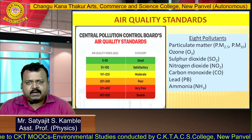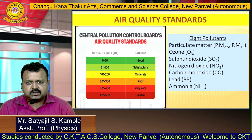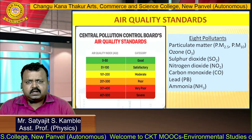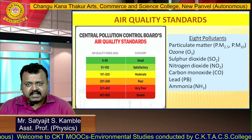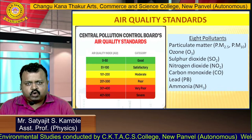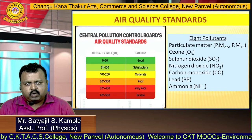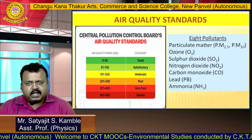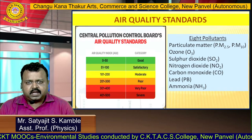Air quality standards have been prescribed by the Central Pollution Control Board. Air quality standard is calculated based on 8 pollutants: particulate matter, ozone, sulfur dioxide, nitrogen dioxide, carbon monoxide, lead and ammonia. Based on these pollutants, we analyze the quality of air. According to the index, if the quality of air is between 0 to 50, then the air is considered to be good. If between 51 to 100, then it is satisfactory. If the pollutant rate is very high, the air quality index can reach a value of 401 to 500, in which case air is considered to be severe.